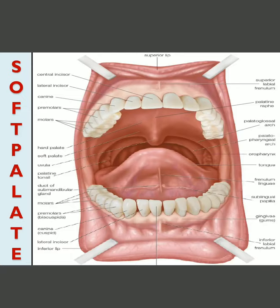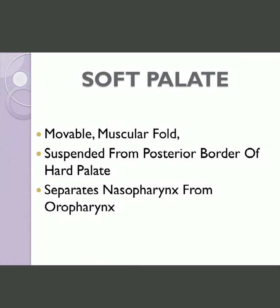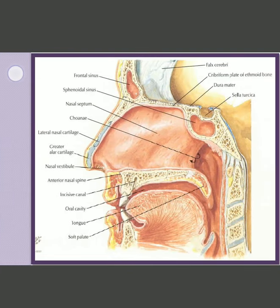Good morning students, today we would discuss the anatomy of the soft palate. The soft palate is a muscular fold made up of various muscles and it is movable. It is suspended from the posterior border of the hard palate into the oral cavity, and it separates the nasopharynx from the oropharynx.